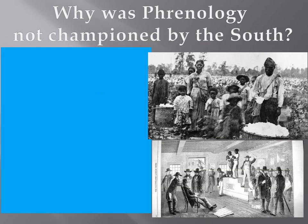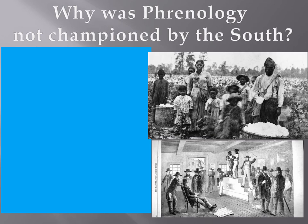The question was why phrenology was not championed more by the South. Many prominent phrenologists were polygenists, and polygenism refutes the literal translations of the Bible held by prominent Southern religions. Most Southerners followed the philosophy of degeneration — that people of color were degenerated descendants of the sons of Noah.